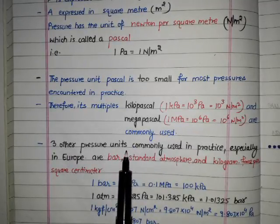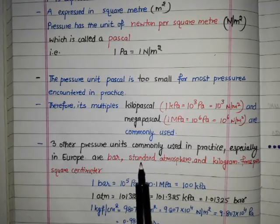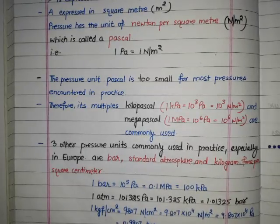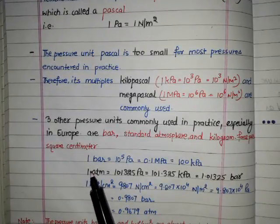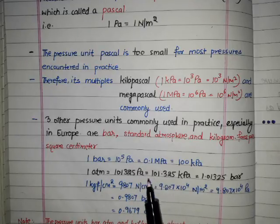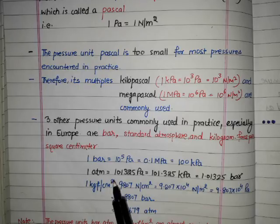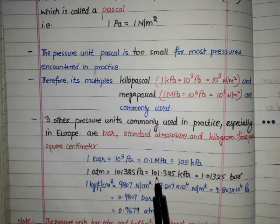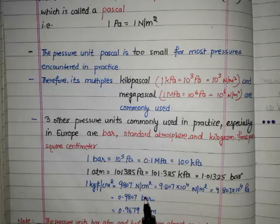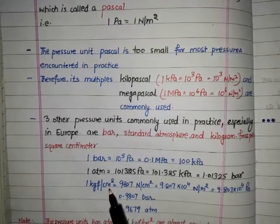There are three other pressure units commonly used in practice, especially in Europe. These are bar, standard atmosphere, and kilogram force per square centimeter. One bar equals 10 raised to power 5 Pascal, which is also equal to 0.1 megapascal or 100 kilopascal. One atmosphere equals 101325 Pascal, which may be written as 101.325 kilopascal, or 1.01325 bar.